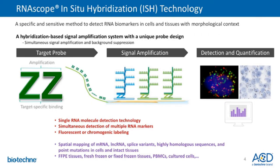The RNA Scope in-situ hybridization technology is a highly specific and sensitive method to detect RNA biomarkers in cells and tissues within the morphological context. It is a hybridization-based signal amplification system with a unique probe design that allows for simultaneous signal amplification and background suppression. The technology consists of three parts: a unique target probe designed against your sequence of interest, a signal amplification system that generates a high signal-to-noise ratio, and visualization of single RNA molecules as punctate dots. The assay allows for spatial mapping of mRNA, lncRNA, splice variants, highly homologous sequences, and point mutations in cells and intact tissues, visualized with either fluorescent or chromogenic labels.